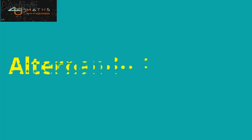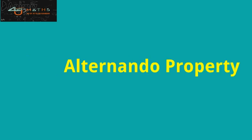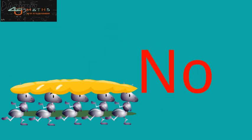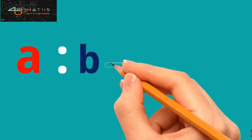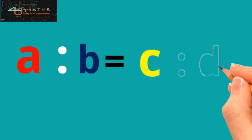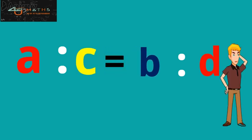Do you know the alternative property in proportion? If the answer is no, then here it goes. If a:b is equal to c:d, then a:c is equal to b:d.